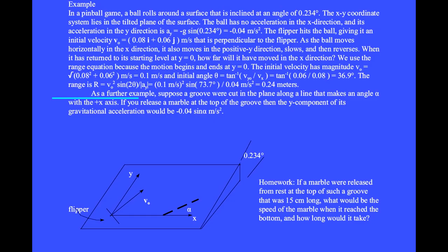As a further example, suppose a groove were cut in the plane along a line that makes an angle alpha with the plus x axis. If you release a marble at the top of the groove, then the y component of its gravitational acceleration would be minus 0.04 sine alpha meters per second squared.